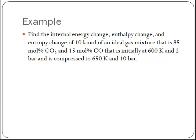Here's just one little example. I have an ideal gas mixture, 10 kilomoles of this ideal gas mixture. It's 85% CO2, 15% CO. Initially, it's at 600 Kelvin and 2 bar, and it's compressed to 650 Kelvin and 10 bar. I want to find the internal energy change, the enthalpy change, and the entropy change. So, I need to gather data at 600 Kelvin and 650 Kelvin from the ideal gas tables for CO2 and CO.